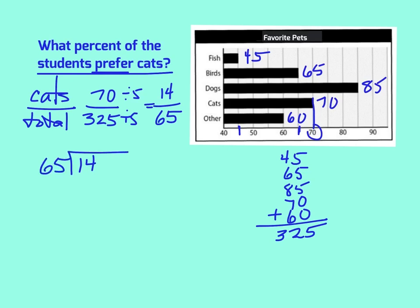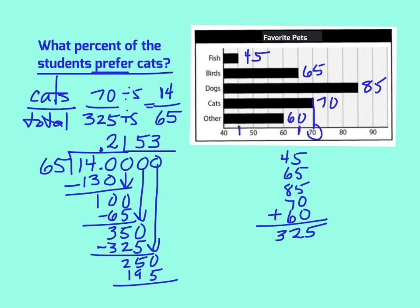Remember, the top dog gets the house. The numerator goes into the division box. When you divide, you get 0.2153, which would be about 21.5% of the students prefer cats.